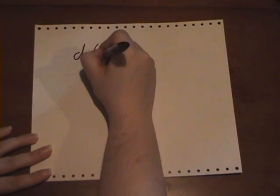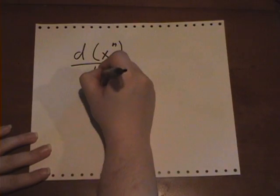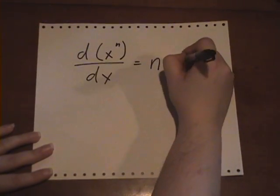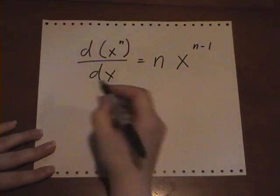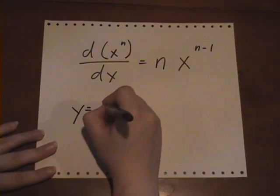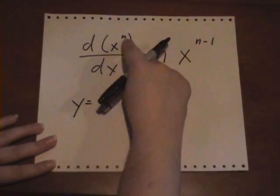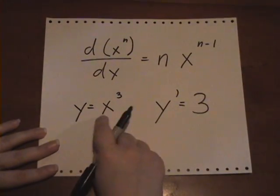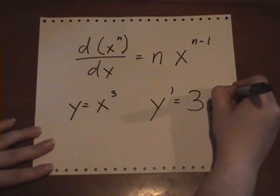And the power rule is the derivative of x^n dx equals n x^(n-1). So that just means that if you have y equals x to the third, you take the 3 out, which is the exponent, 3, and then you take 3 and you subtract 1 from it. So it's x squared.